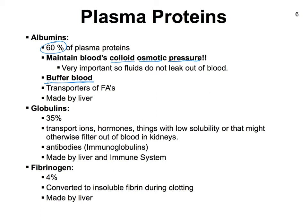Albumins also buffer the blood by binding certain acids such as fatty acids, helping maintain blood pH around 7.4. The second major group, globulins, make up about a third of total plasma proteins. They are major transporters of hormones and other poorly soluble substances, and also prevent certain molecules from being lost through kidney filtration. Some globulins function as antibodies, or immunoglobulins, playing an important role in immune defense. Most globulins are made by the liver, and some by the immune system.